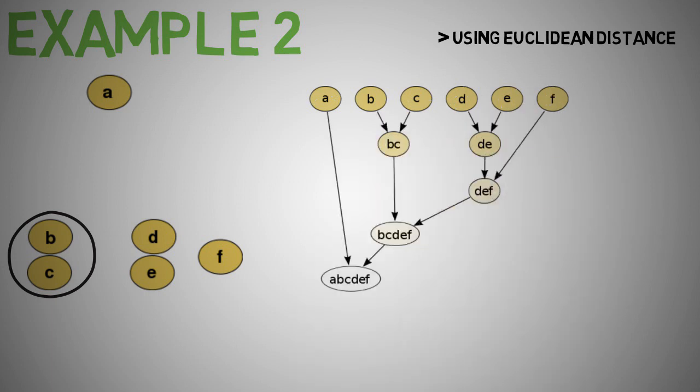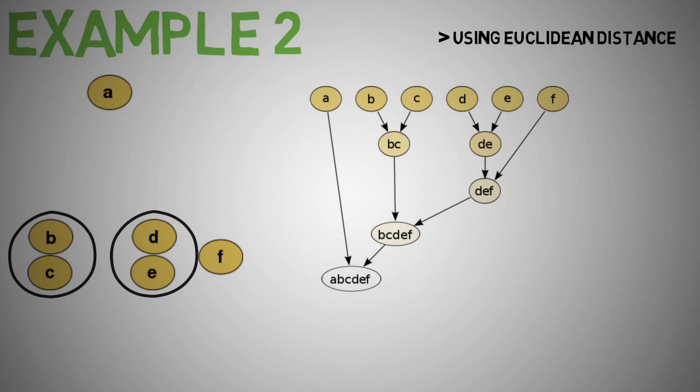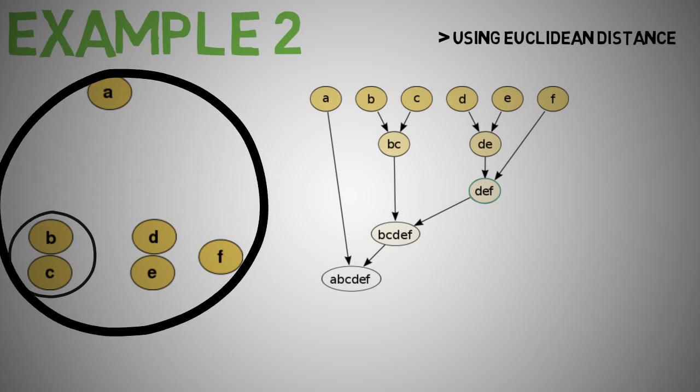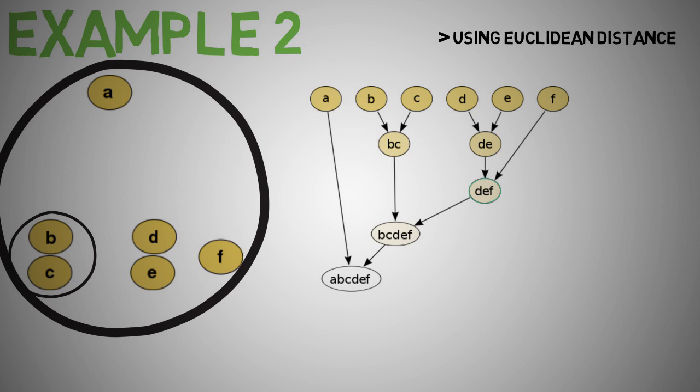Once we have B and C clustered, we can do the same for DE which is more or less the same distance apart as B and C. Next step we join the clusters DE with F to form DEF. Notice how long the branch is from the F node. And then we can do the same but with node BC and DEF to form another one.